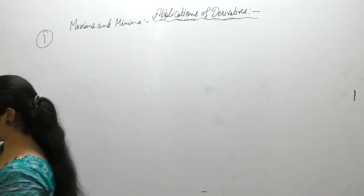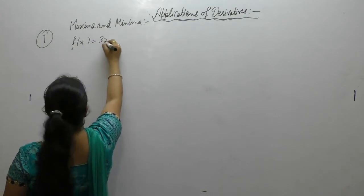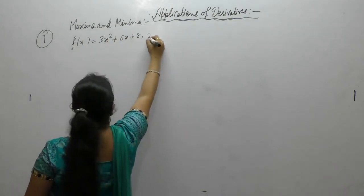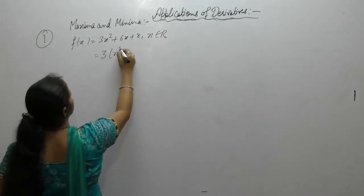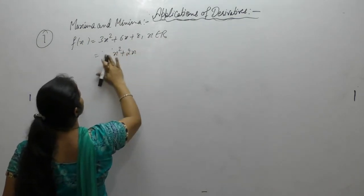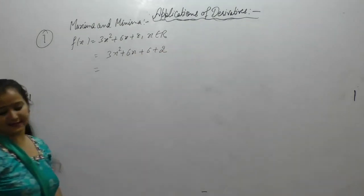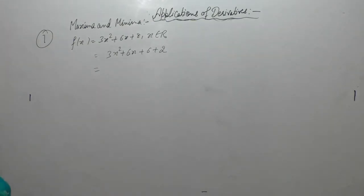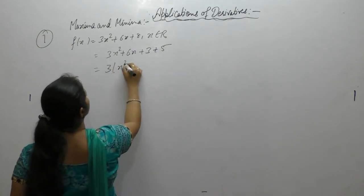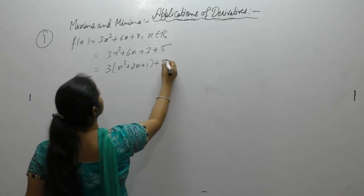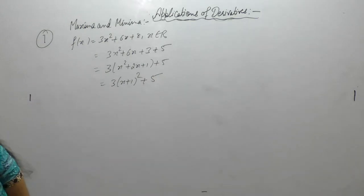The first question is: find the maximum and minimum values, if any, of the following function — 3x squared plus 6x plus 8, where x belongs to real numbers. We can rewrite this function by writing 8 as 6 plus 2, and then taking 3 common to get 3 into (x plus 1) whole square.